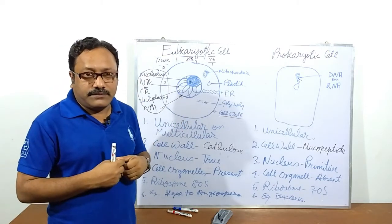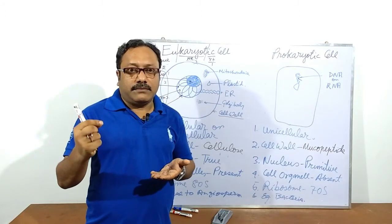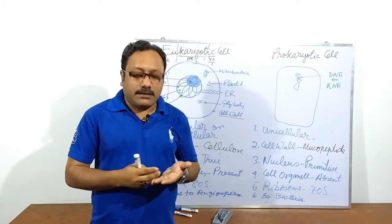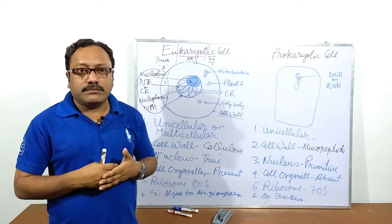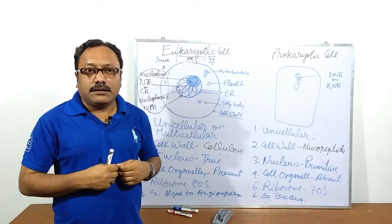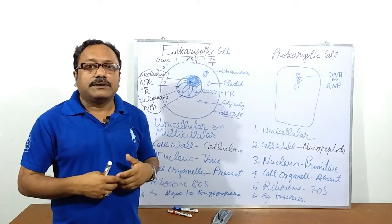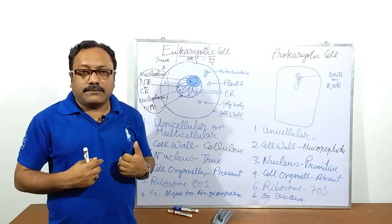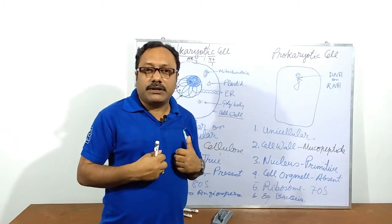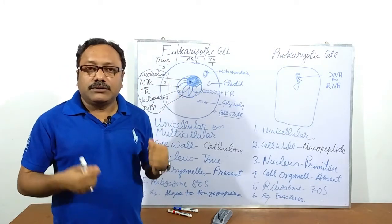Eukaryotic cells are present from unicellular to multicellular organisms, in plants as well as animals. In the case of plants, the unicellular eukaryotic examples are Volvox, Oedogonium, and Chlamydomonas. Multicellular algae include Spirogyra. All fungi like yeast and Mucor are eukaryotic cells. All bryophytes like moss, all pteridophytes like fern, and all angiosperms and gymnosperms are categorized under eukaryotic cells.